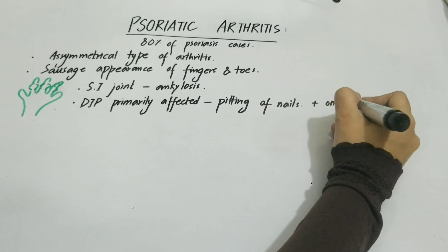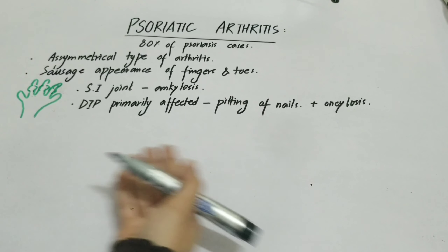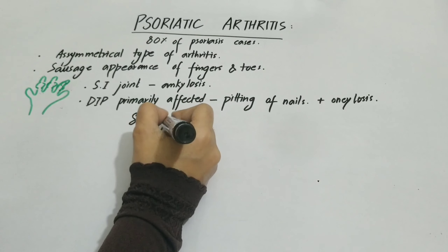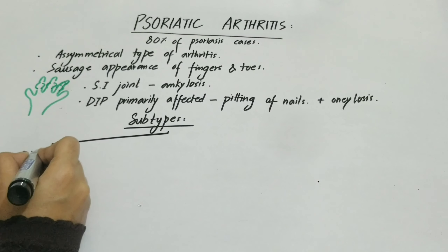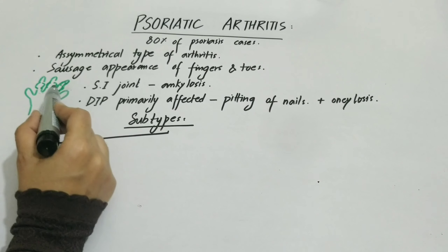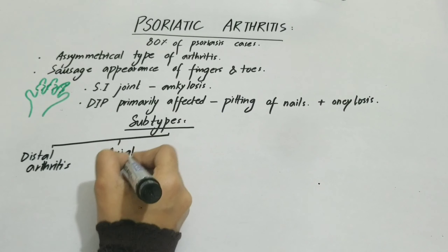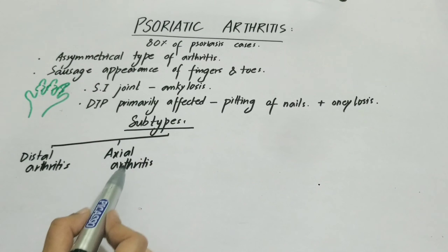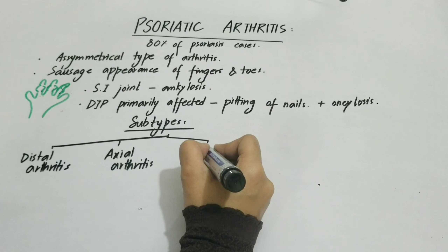Another important hallmark is the DIP joint being primarily affected, along with nail pitting. The DIP is the most distal interphalangeal joint. What happens here is that we have pitting of nails — it goes inside. In the medical condition, there is painless detachment from the nail bed, which we call onycholysis. So nail pitting and onycholysis are common hallmarks of psoriatic arthritis, along with sausage appearance.